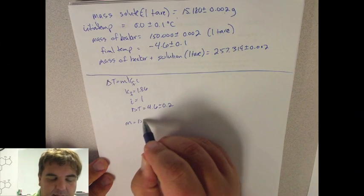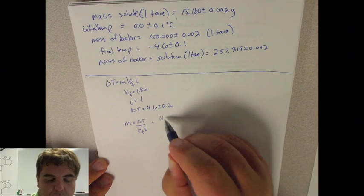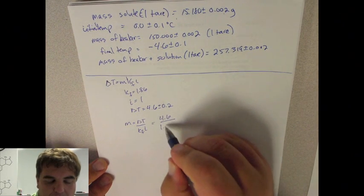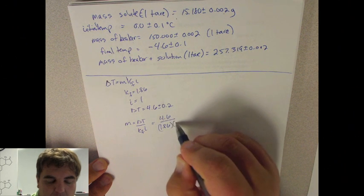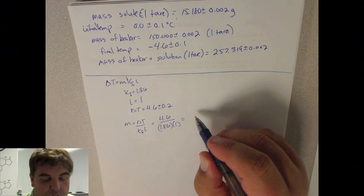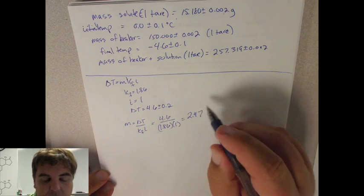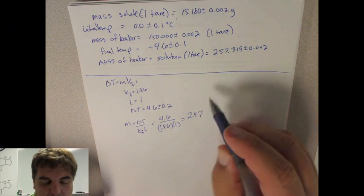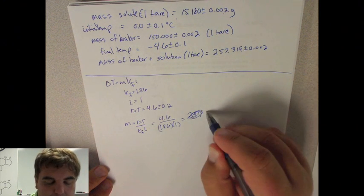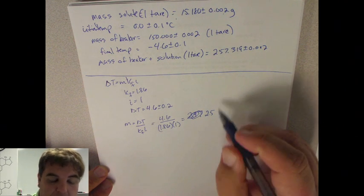That allows us then to solve for molality. So that's delta T divided by KF over I. Again, I is going to be 1, equals 4.6 divided by 1.86 times 1. And so that then equals 2.47 or 2.5 if we're doing sig figs, 2.5 molality.